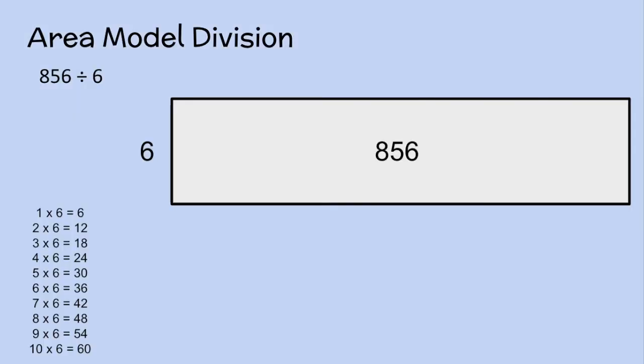Now, this example that we have here is a much larger number. Plus, it's not going to work out as perfectly as that last one did. I mean, they're just not always going to be that smooth. So there's some strategies that we can use to help us get through it. I already set up my model and I also listed all of the multiplication facts for the number 6, since my divisor is 6.